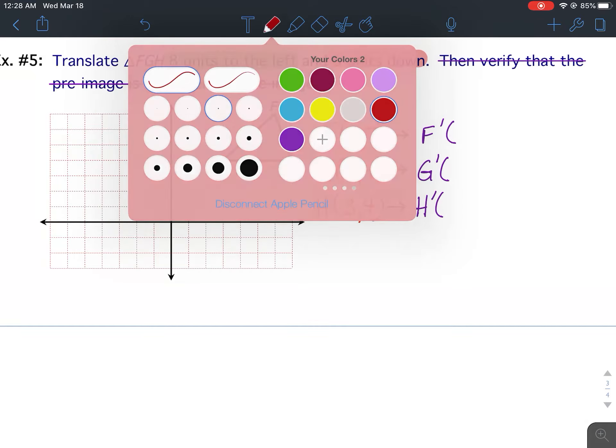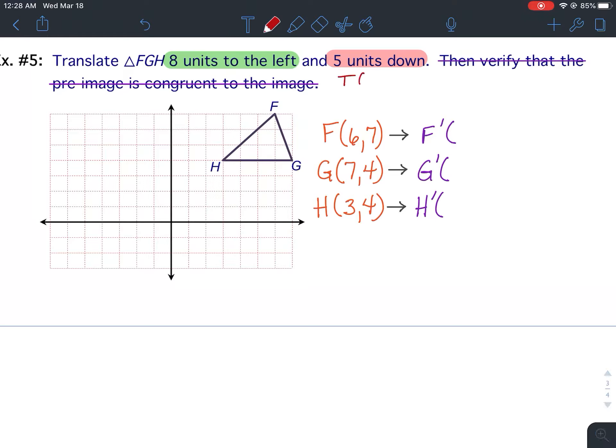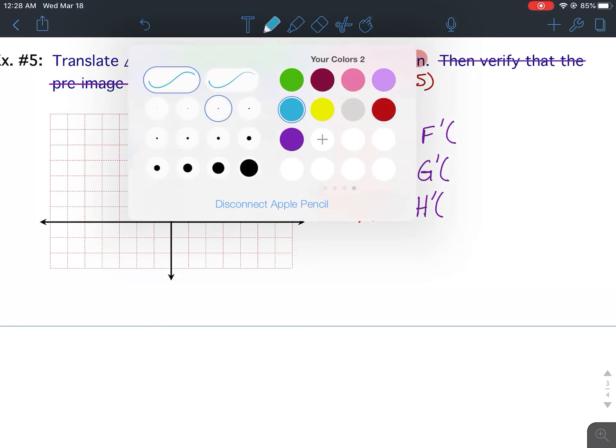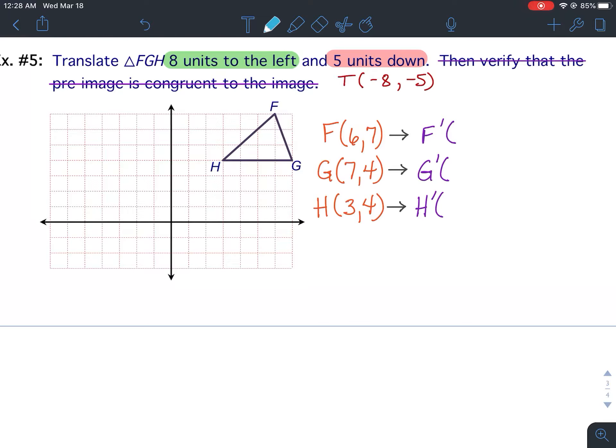So the translation for example five: eight units to the left means subtract eight. And five units down means subtract five. So above my x coordinates, I'm going to put minus eight. Above my y coordinates, I'm going to put minus five.